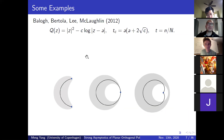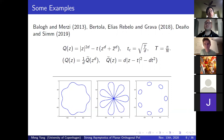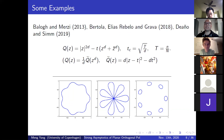The third example is given by the formula Q(z) with an axial symmetry. This model was first introduced by Balogh and Merci in 2013. In 2018, Bertola, Elias, Rebelo, and Grava obtained the strong asymptotics for the critical case, and in 2019 Deaño and the same authors obtained the partition function. Rewriting Q as Q-tilde, one can see it is still related to the Ginibre ensemble, giving a droplet centered at T with radius T_c. The three pictures correspond to pre-critical, critical, and post-critical cases.